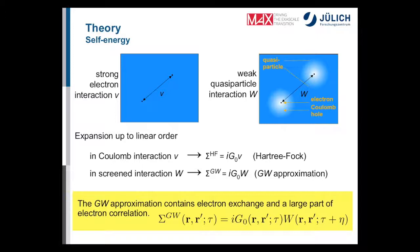We can do Hartree-Fock with this screened interaction, which gives the GW self-energy: we simply replace the bare Coulomb interaction V by the screened Coulomb interaction W. However, GW is much harder to calculate than Hartree-Fock because screening is a dynamical process — the screened interaction depends on time or frequency. In a simple sentence: GW is Hartree-Fock with a dynamically screened Coulomb interaction.